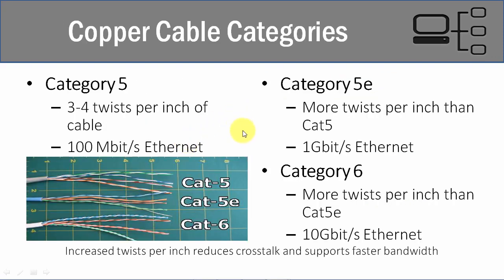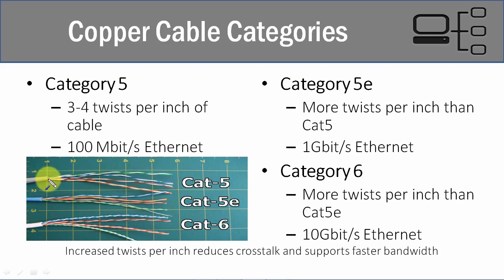There are different categories of twisted pair cabling, and the category determines what bandwidth it supports. There's Category 5, Category 5E, and Category 6. The cabling itself is the same — the only difference is the number of twists per inch. More twists means faster speed, less signal emanation, less EMI, and less crosstalk.